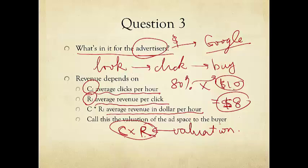this is the average clicks per hour, this is the average revenue per click, and therefore, the total counted by this multiplication is the average revenue in dollars per hour. And this is a very important quantity we'll come back to many times today called the valuation of this advertisement space to this buyer. But different ad spaces have different C's and different buyers have different R's. Either way, R will be different for different buyers. But in any case, the multiplication of these two numbers is the valuation.